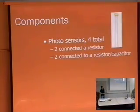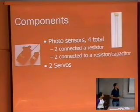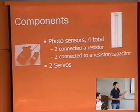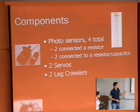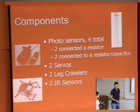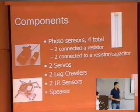Basically, we used four photosensors in total. Two sensors are connected in series with a relay, two connected in series with a resistor and capacitor. We used two servos that controlled the legs, and we got two leg crawlers from the Bobot kit. The two IR sensors are used in the back — if it ever climbs up a ramp and is unable to make it over because of the angle, instead of toppling over and falling backwards, the IR sensors will tell the robot to walk backwards instead of falling back.